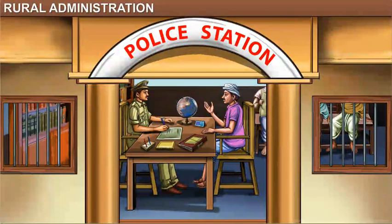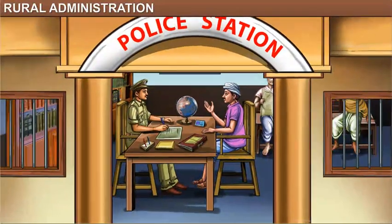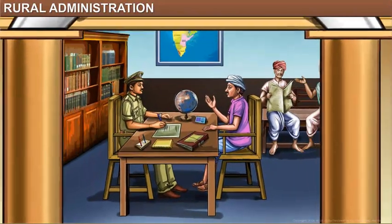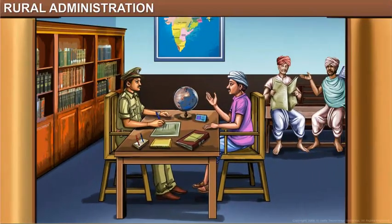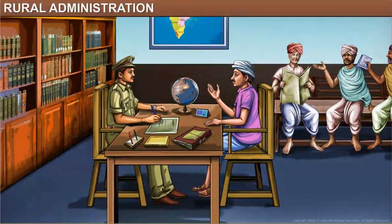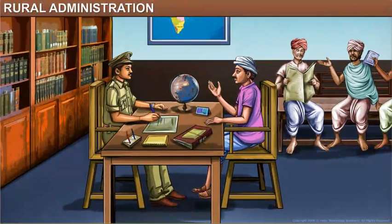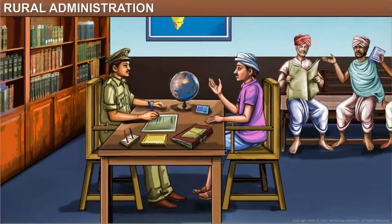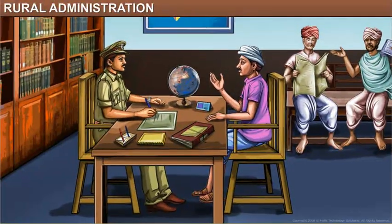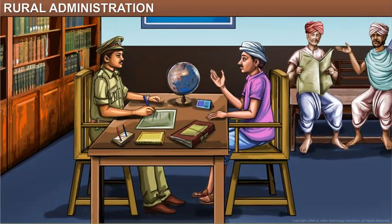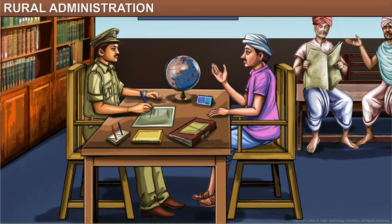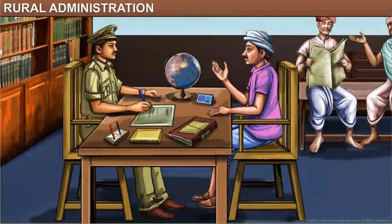If land-related disputes arise, the police get involved. Every police station is given an area of control, so the villagers can file their report in the specific police station under which their village falls.